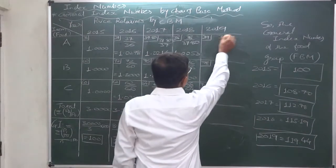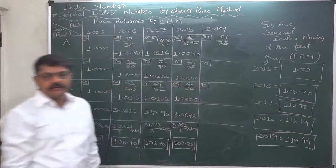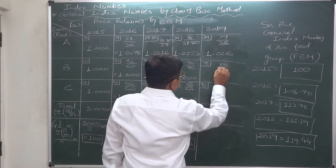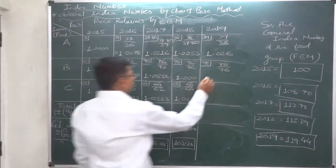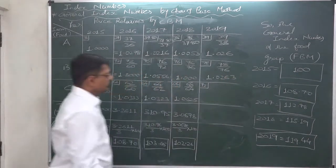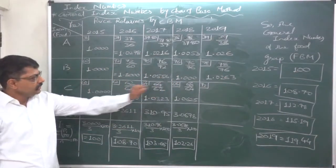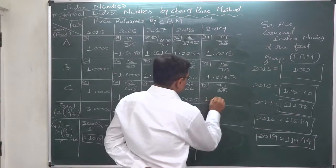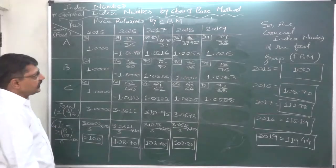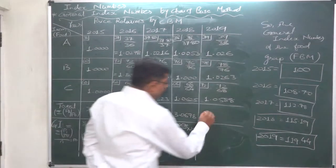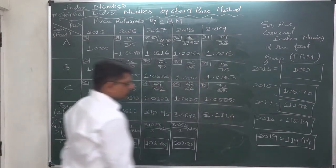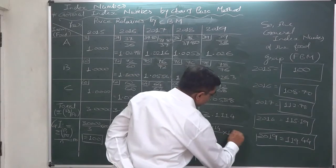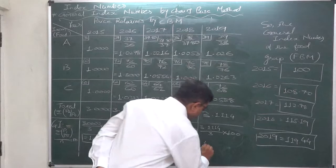For 2019, the first price relative will be 39 divided by 38, giving 1.0263. For item B: 78 divided by 76 gives 1.0263. For item C: 72 divided by 68 gives 1.0588. The summation of price relatives for all three items is 3.1114. Dividing by 3 and multiplying by 100 gives a general price index of 103.71.